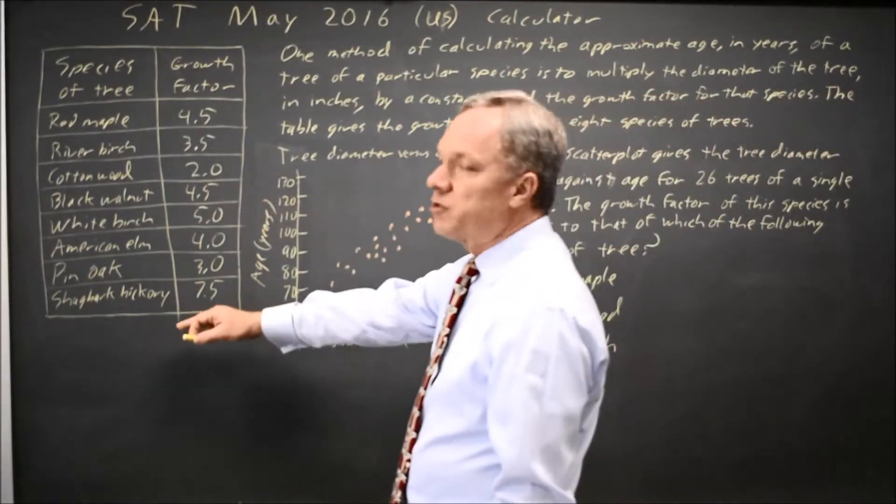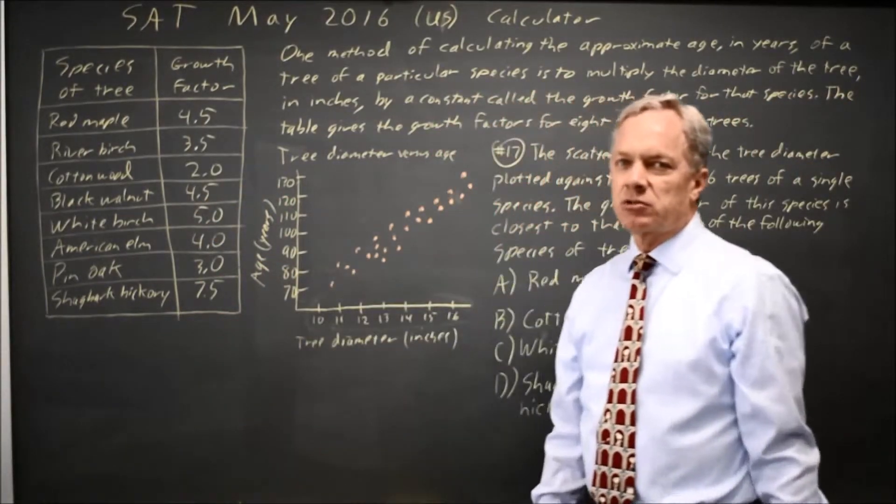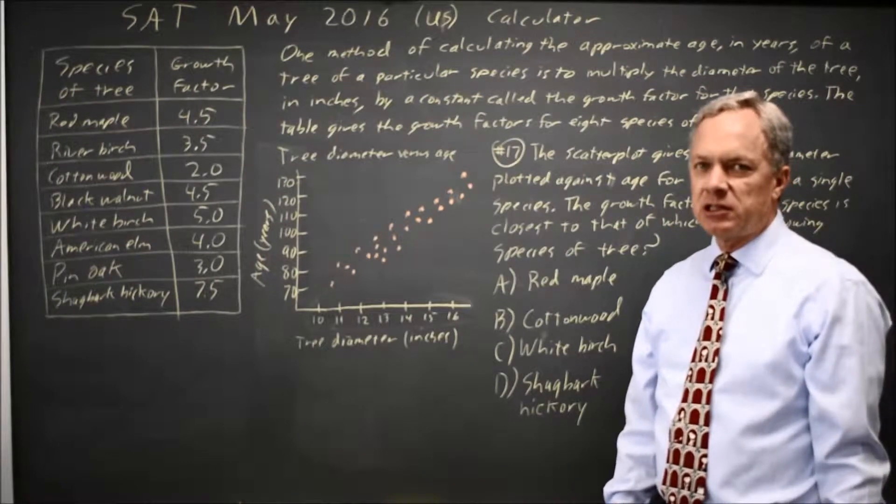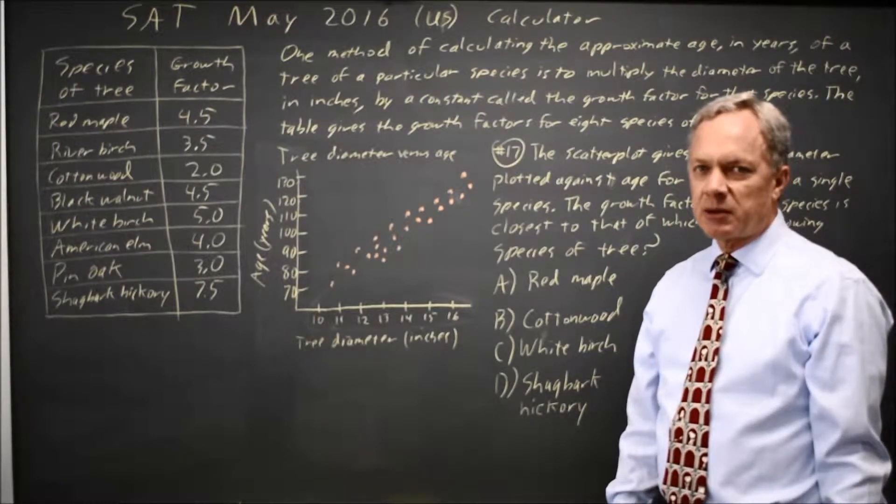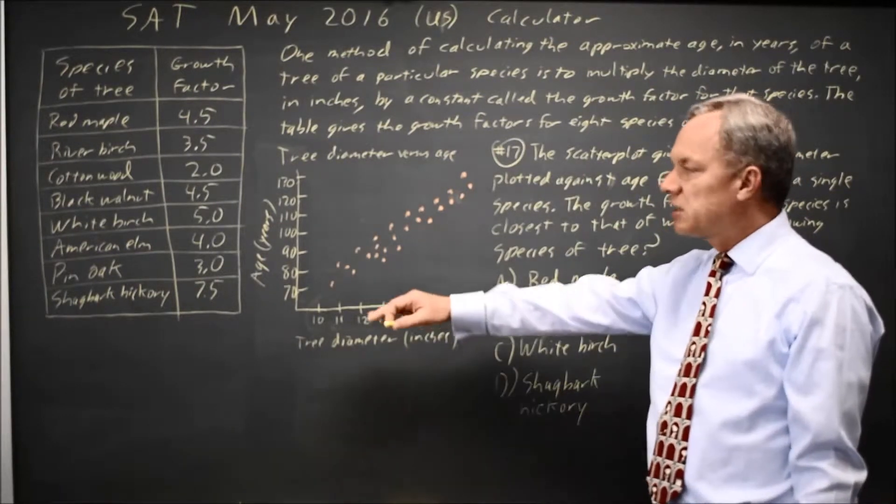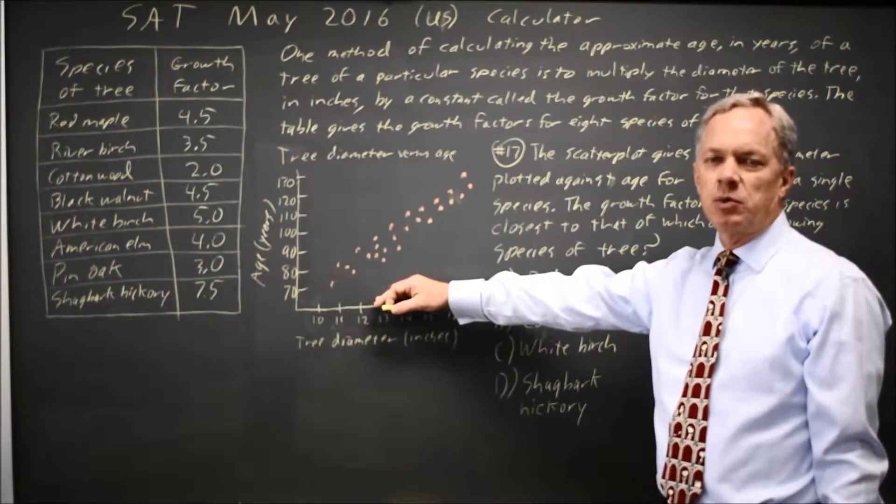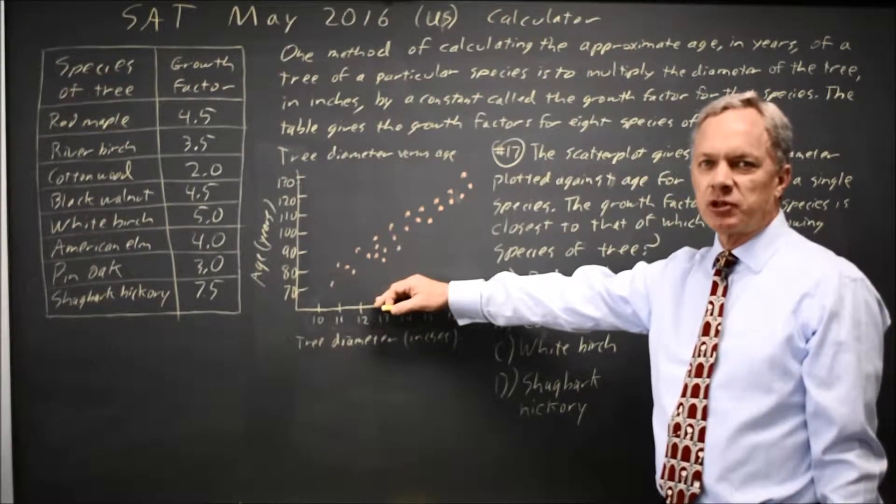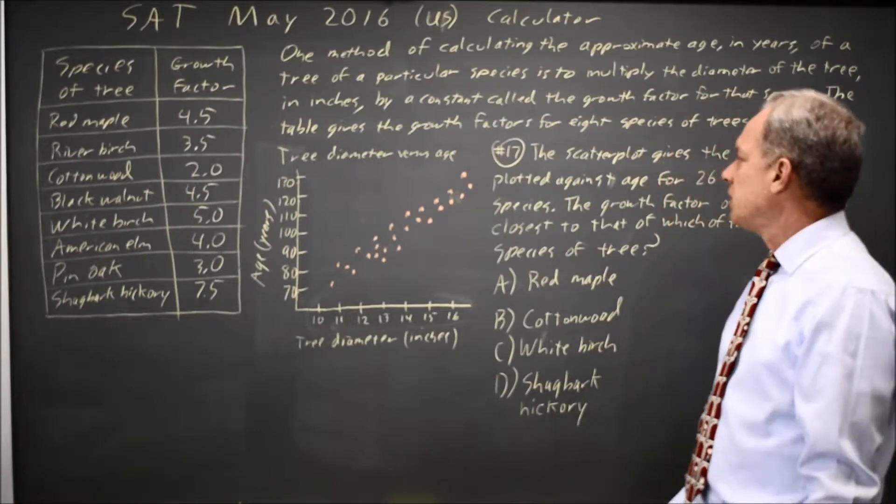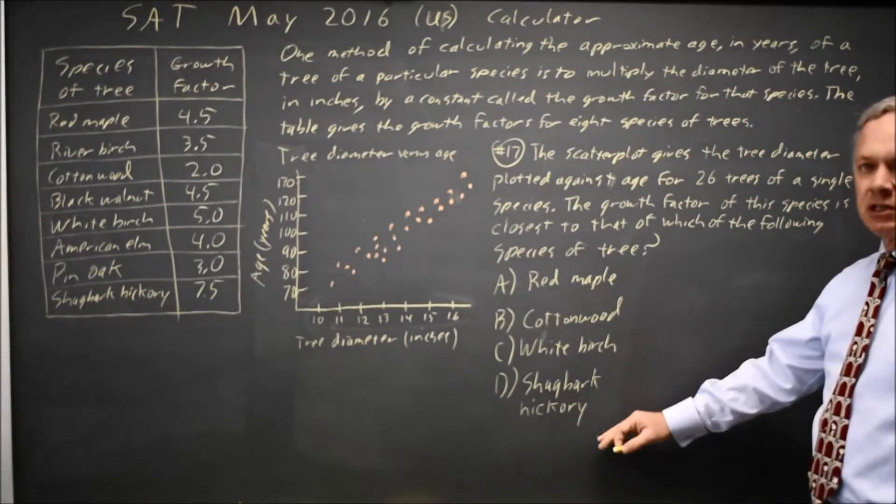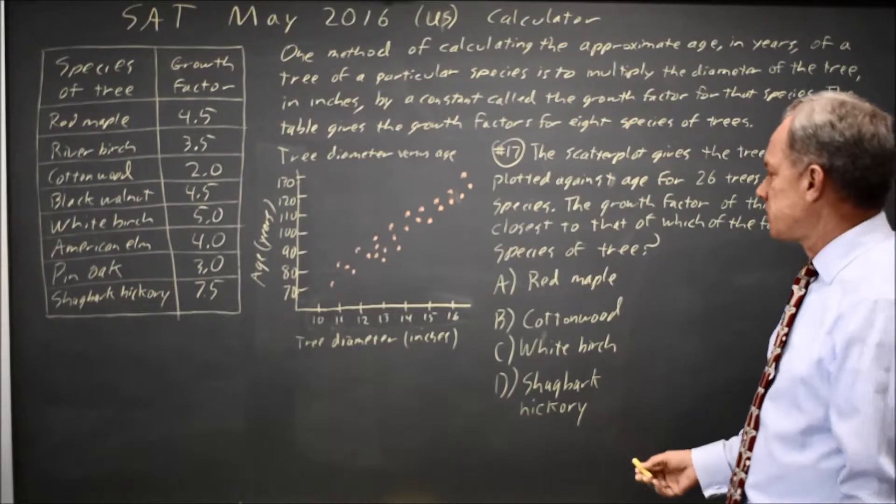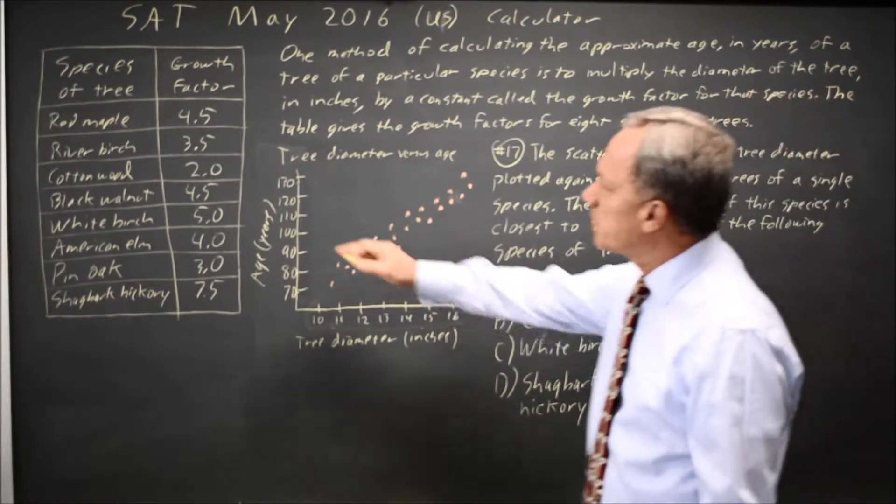College Board gives us a table with growth factors for trees, which growth factors allow you to calculate the age, because the age will be diameter times growth factor for that species. They also give you a scatter plot with the age and diameter for a number of trees from the same species, and they ask which species does the scatter plot match most closely.